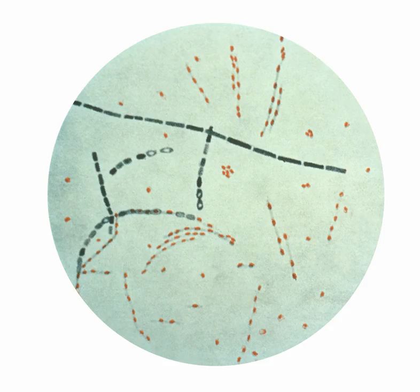The 2001 anthrax attacks in the United States, also known as Amerithrax from its FBI case name, occurred over the course of several weeks beginning on September 18, 2001.